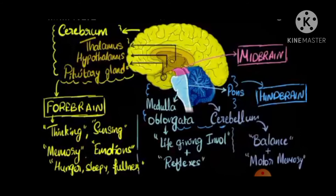Now let us discuss about the hindbrain. The hindbrain consists of the medulla oblongata, which is related to certain reflex actions and life-giving involuntary actions of our body, whereas the cerebellum is related to balance and motor memory.